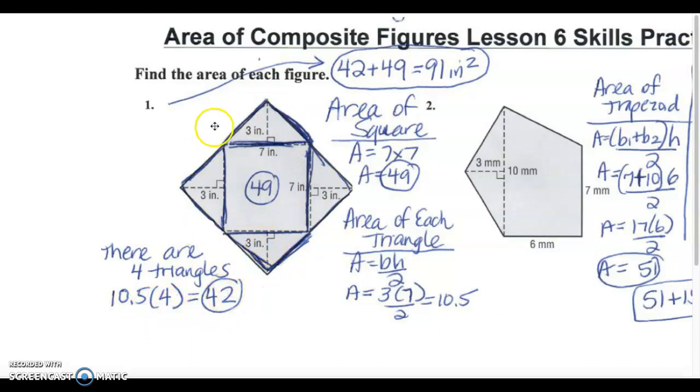Remember a number outside of parentheses means to multiply and that's how I got 42 for my four triangles. Now I have to add together the four triangle areas 42 plus the area of the square. When I add those numbers together I get 91 inches squared for the area of this entire composite figure.